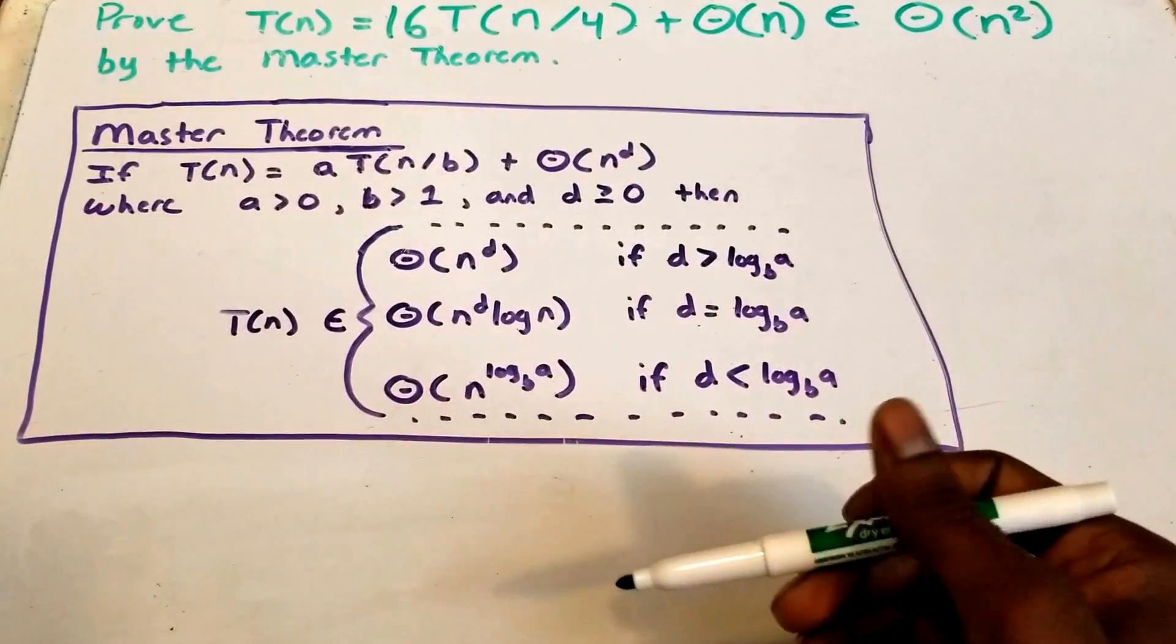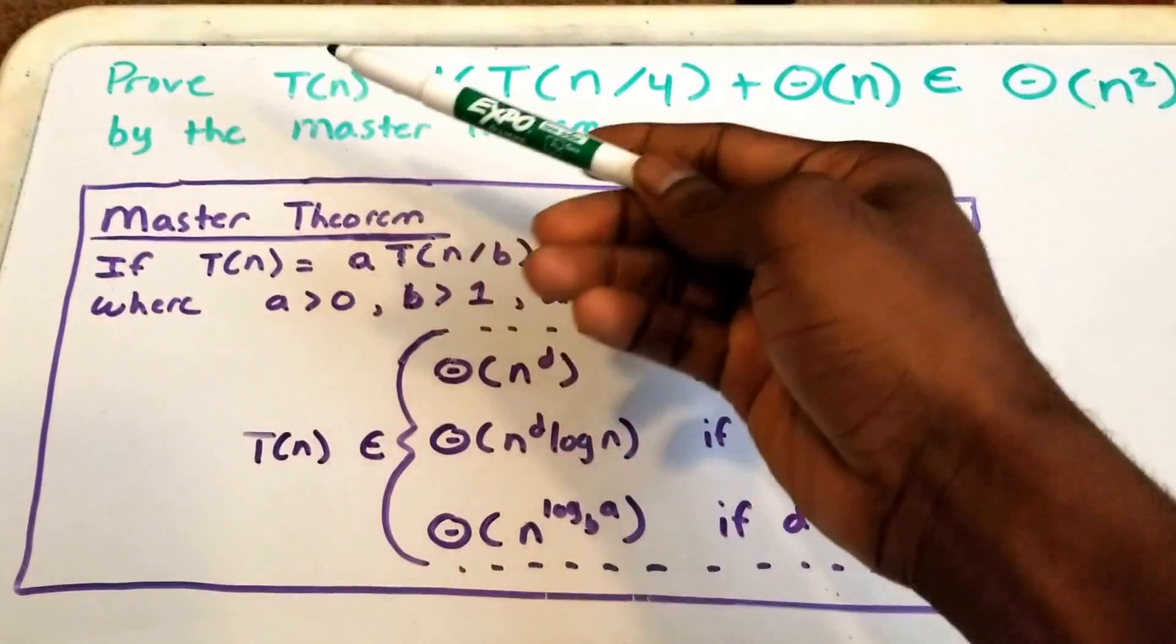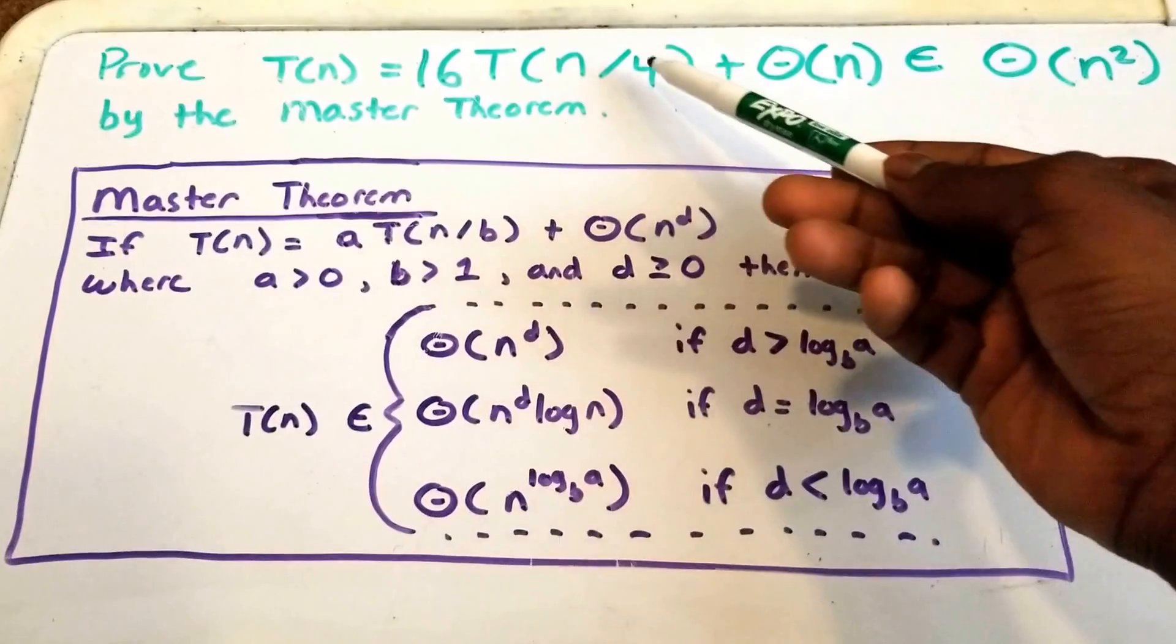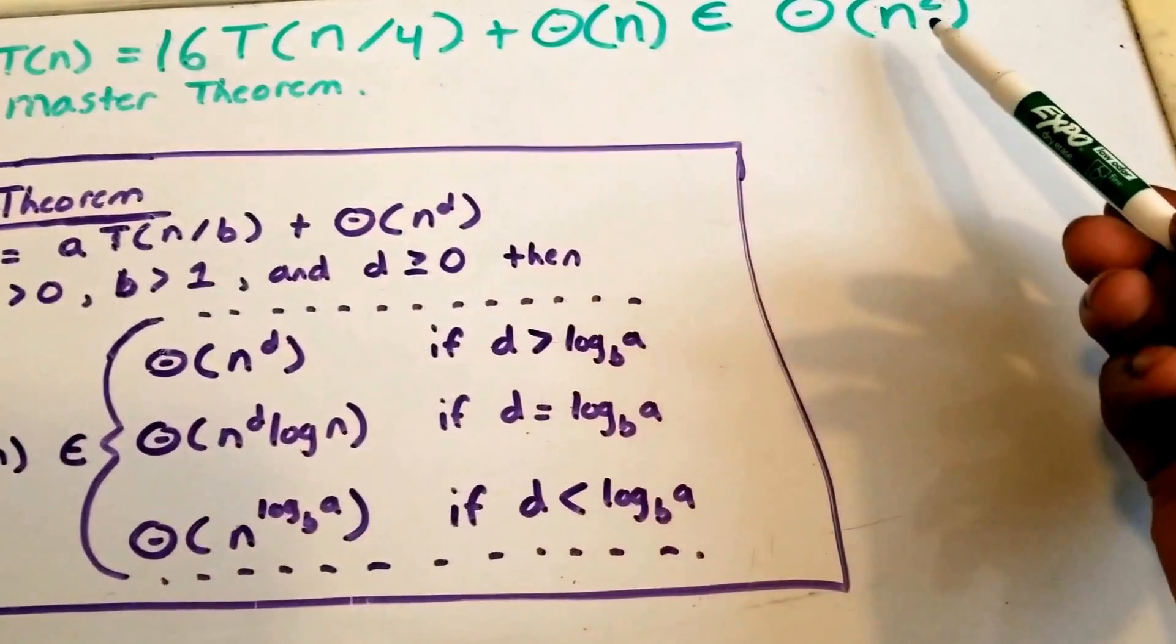Hey guys, and welcome to this video on the master theorem. So here we want to prove that our function T of n which equals 16 times T of n divided by 4 plus theta of n belongs to big theta of n squared.